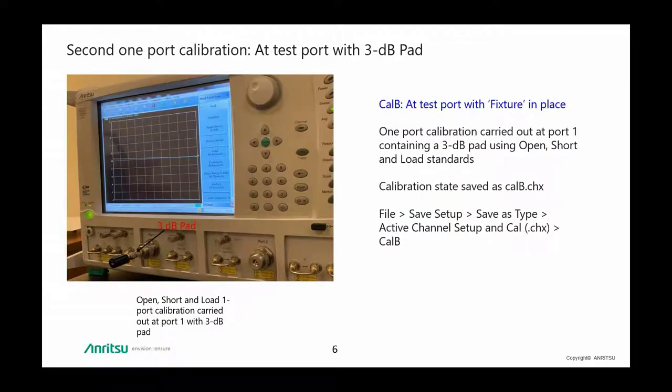Next, we begin the same process of a one-port calibration, but this time we connect a 3 dB pad to the test port and connect the calibration standards at the end of the 3 dB pad. A second one-port calibration is carried out and the state is saved as CalB.